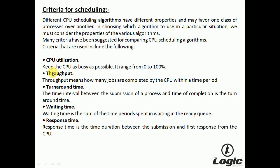Turnaround time is the time interval between the submission of a process and its completion. Waiting time is the sum of the time periods spent waiting in the ready queue. Response time is the time duration between the submission of a process and the first response from the CPU. These are the criteria and various properties of algorithms which are checked when choosing a particular algorithm for a particular situation.